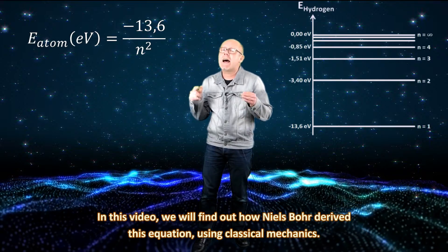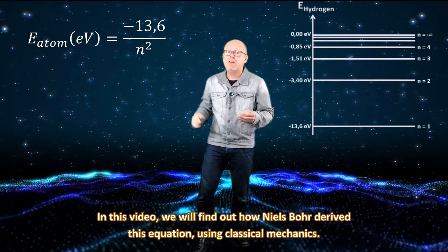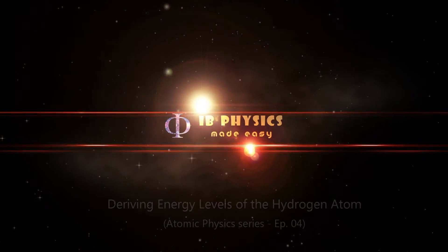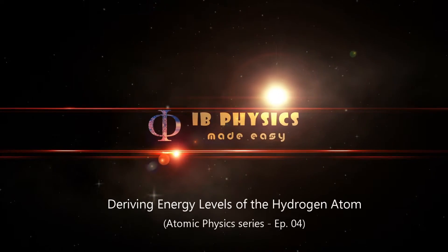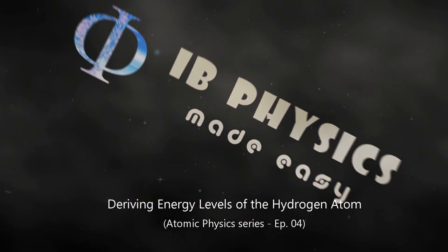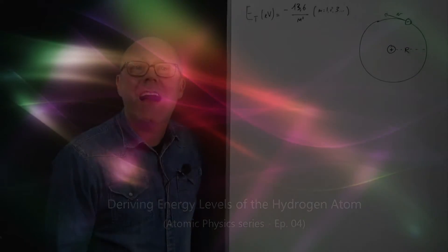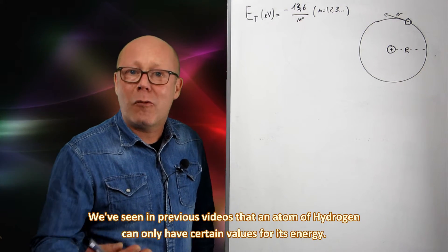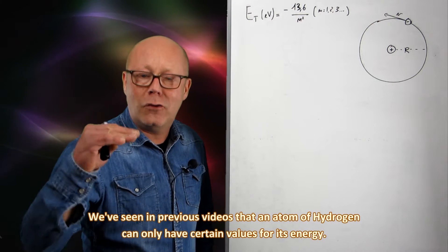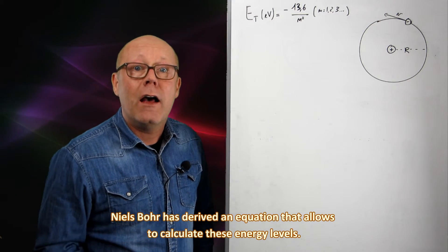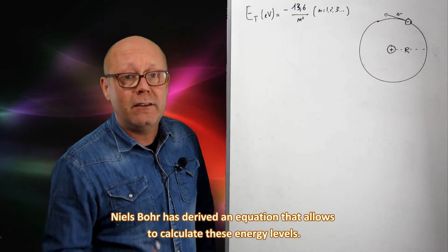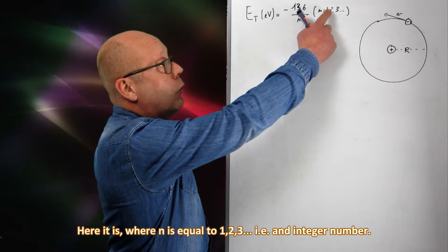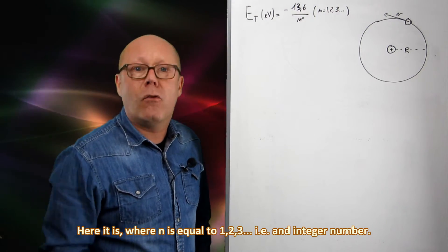In this video, we will find out how Niels Bohr derived this equation using classical mechanics. Hi, welcome to IB Physics Made Easy. We have seen in previous videos that an atom of hydrogen can only have certain values for its energy. Niels Bohr has derived an equation that allows to calculate these energy levels. Where N here is equal to 1, 2, 3, i.e., an integral number.